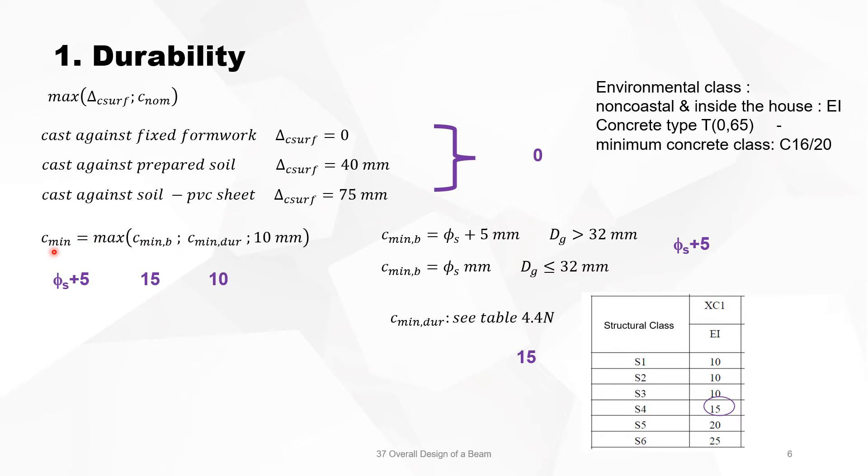So we got now that the concrete cover C_min is the maximum of the three, so the maximum of 10 millimeters, 15 millimeters, and C_min,B is Vs plus 5. So we end up with Vs plus 5, under condition that your diameter is at least 10 millimeters, which will be the case. So C_nominal is now we add up delta C_dev which is 10. So we have in total the cover is the diameter of the longitudinal reinforcement plus 15 millimeters, in the condition that Vs is at least 10 millimeters.